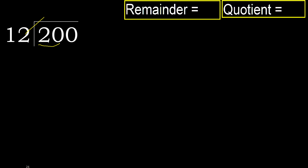multiply by which number is nearest to 20 but not greater? 12 multiply by 2 is 24 — 24 is greater. Multiply by 1: 12 is not greater, ok.